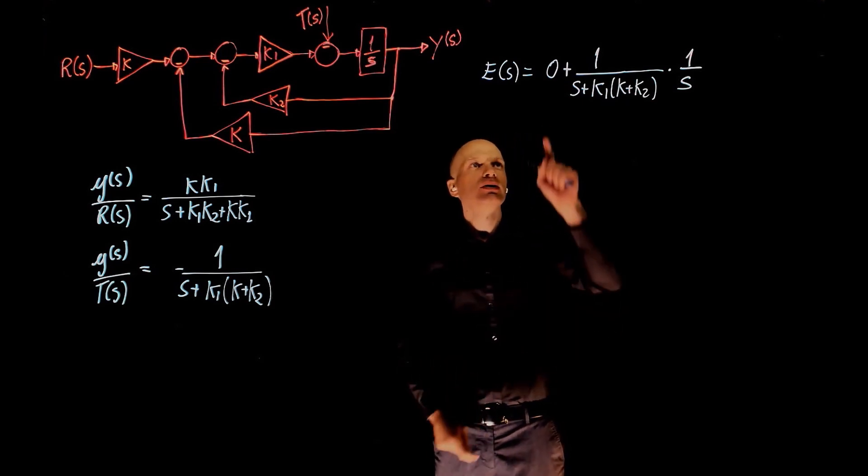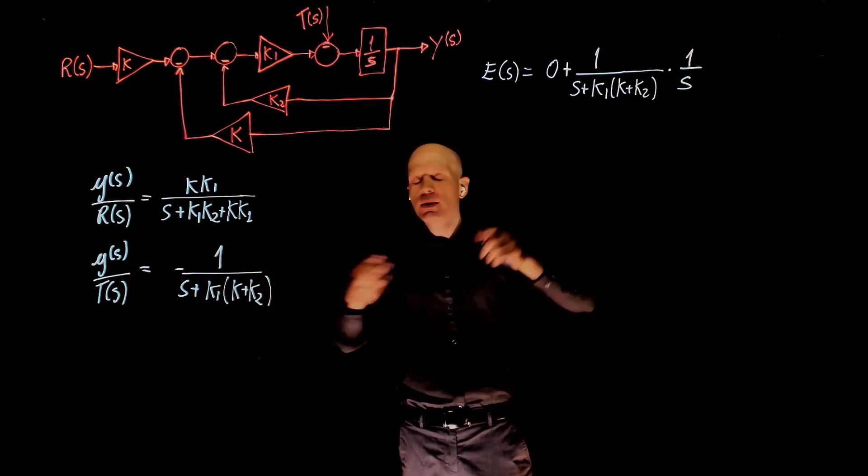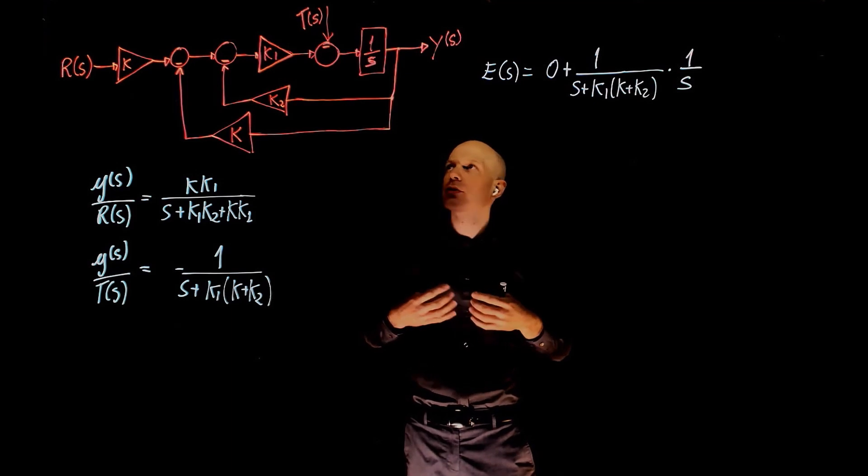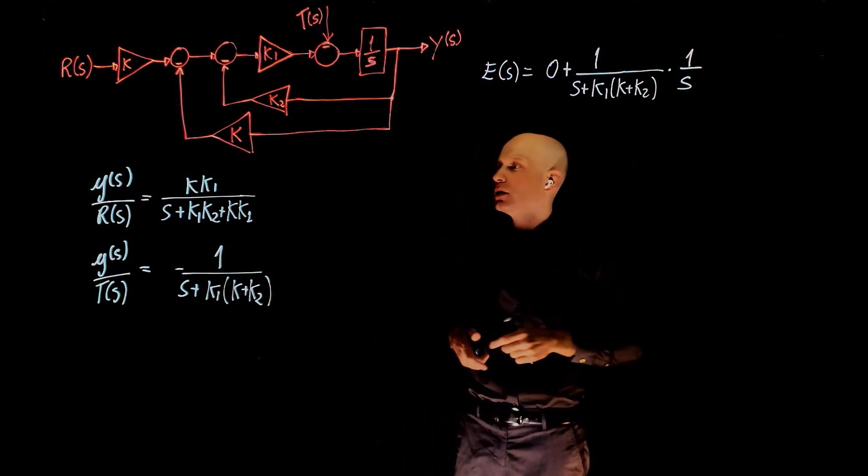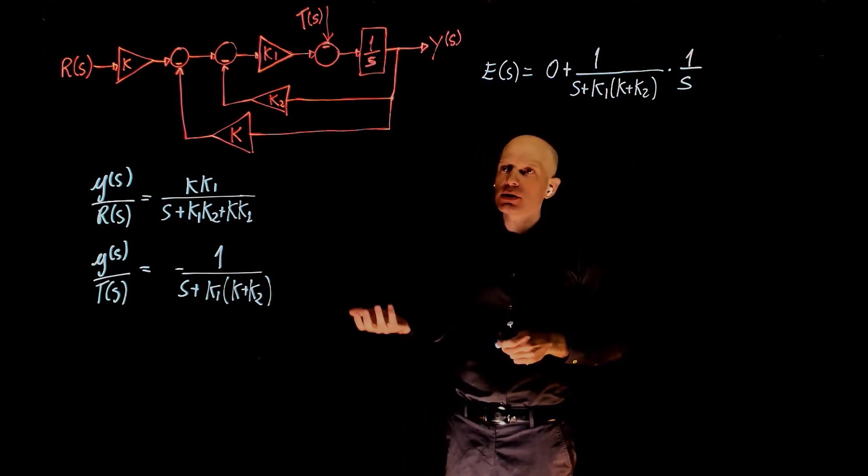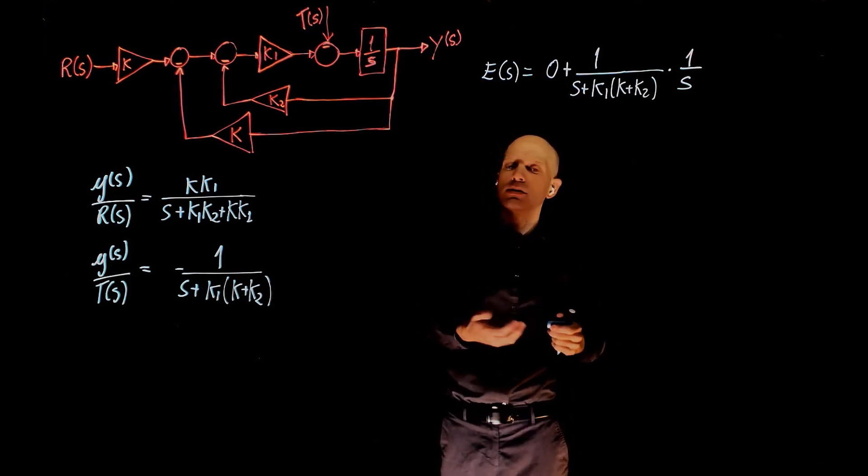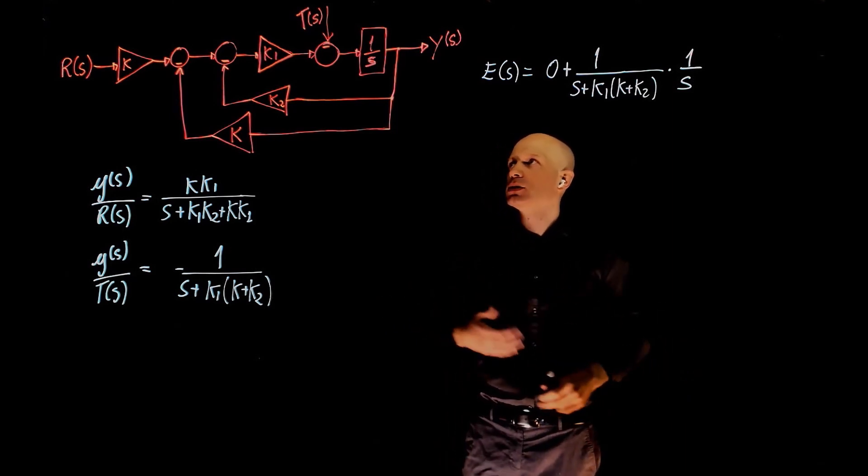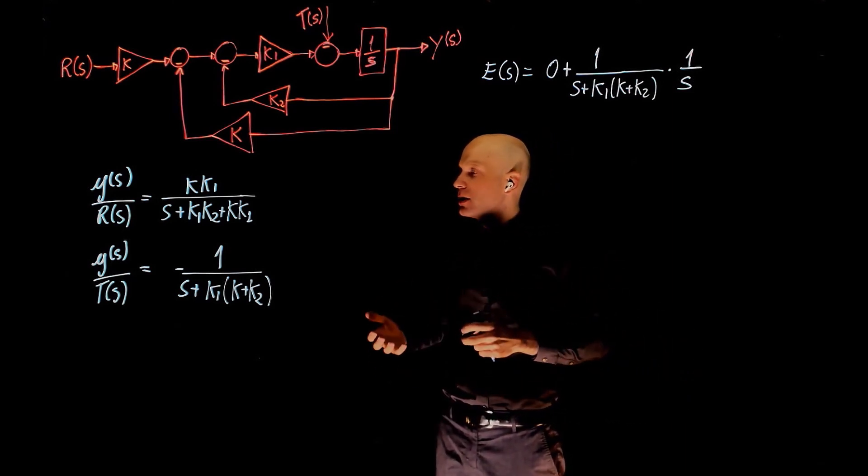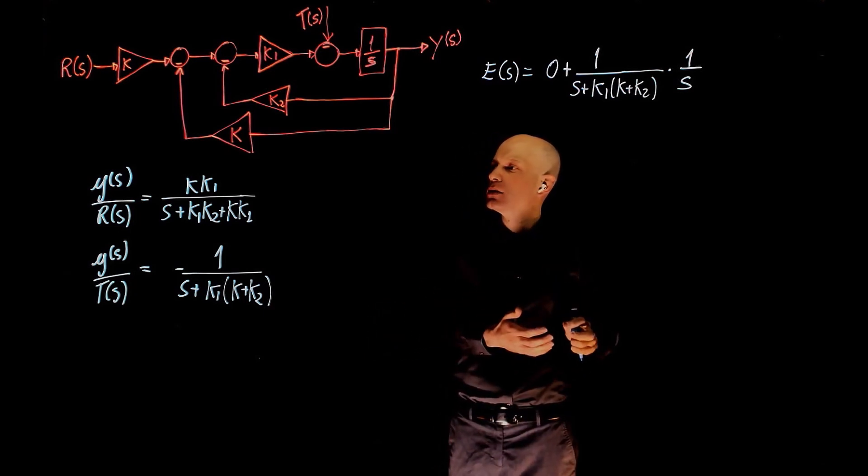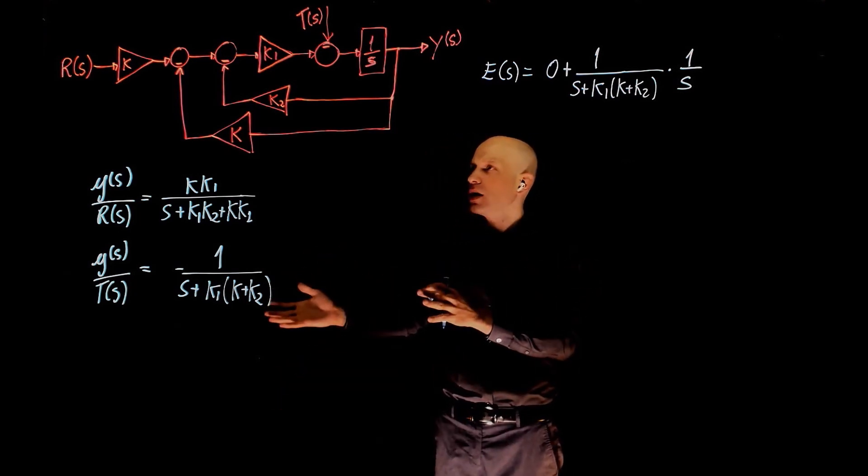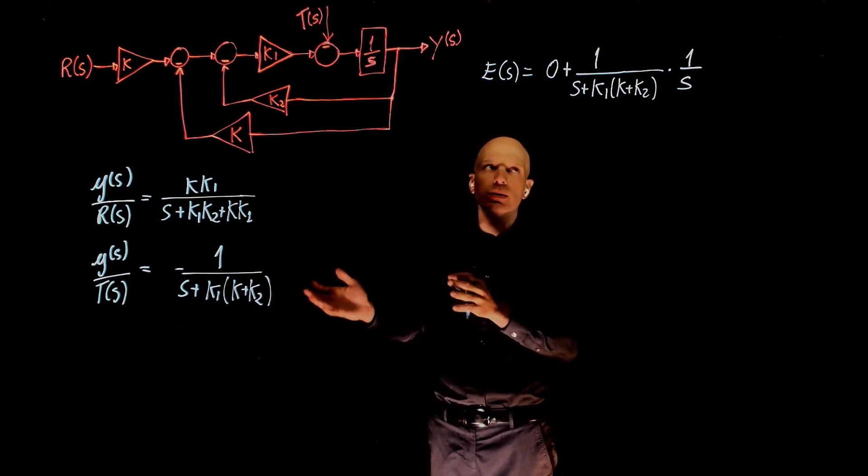Why are we not doing here t of s minus y of s? That wouldn't make sense because there is no error with respect to a disturbance. Disturbance is something external to the system, and it doesn't make sense to compare the current state of the system to a disturbance. It does make sense to compare the current state with the desired state, and in this case our desired state is 0.